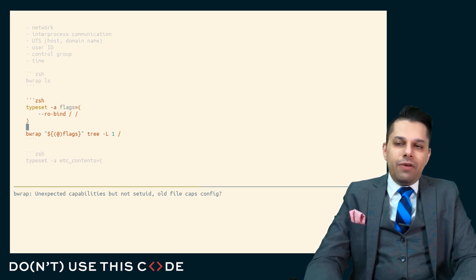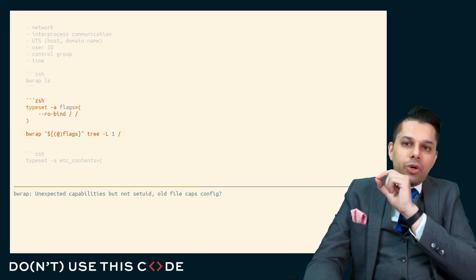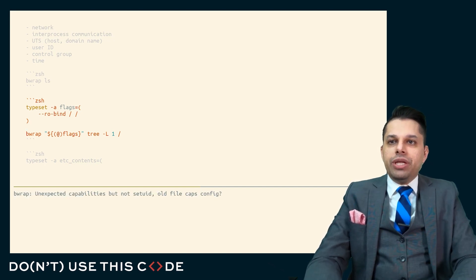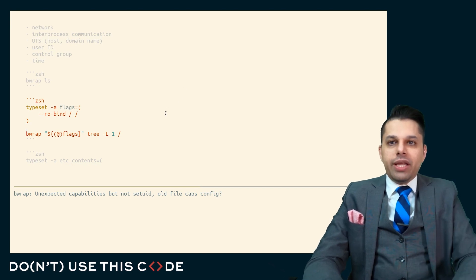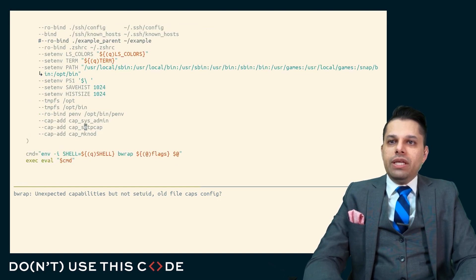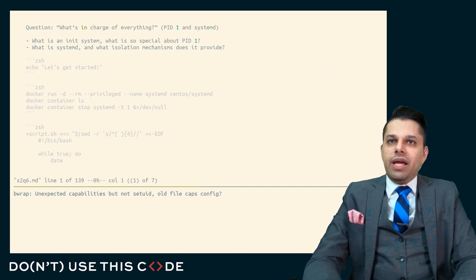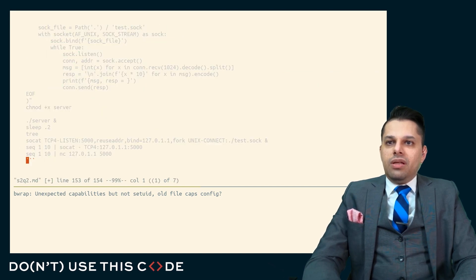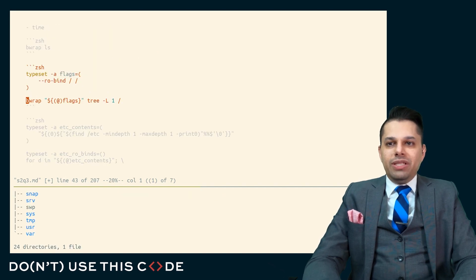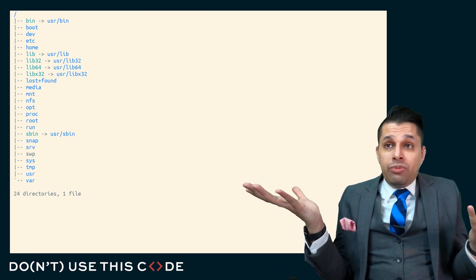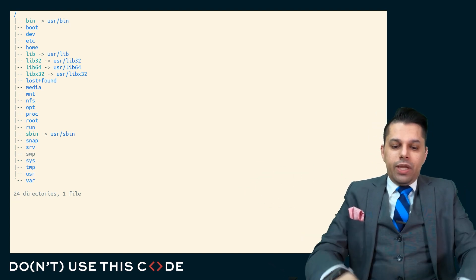Here's a BRAP configuration that should work — let me remove those capabilities and go back to where we were. Here I'm going to read-only bind my root directory and then run tree. And as you can see, that looks like my root directory normally.